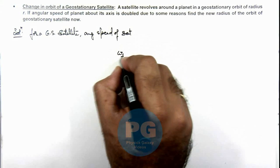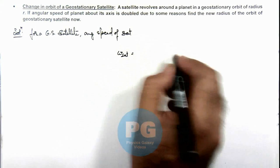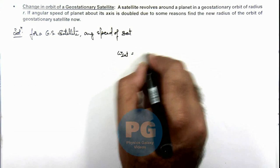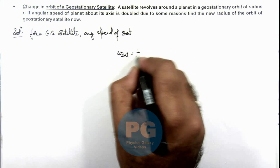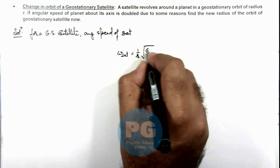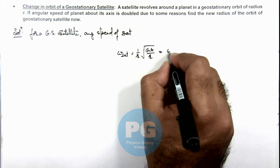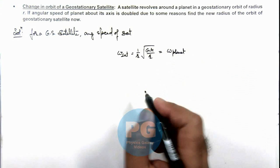This omega satellite can be given as the relation we already studied in concept videos: it is revolution velocity by the radius, so it is (1/r)√(GM/r), which is equal to the omega of planet for it to be a geostationary satellite.